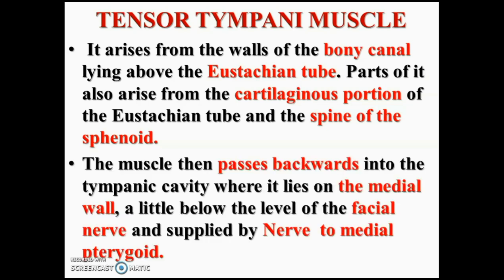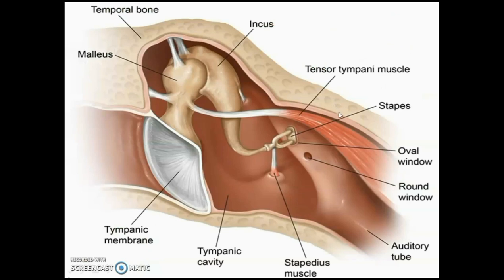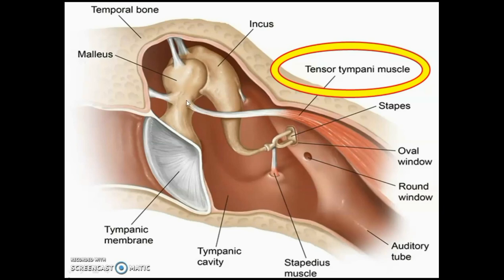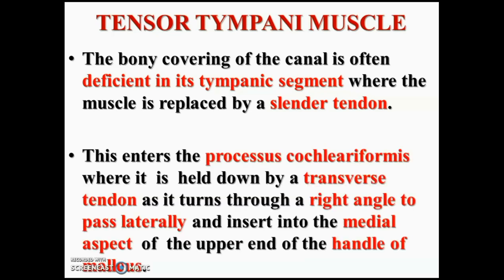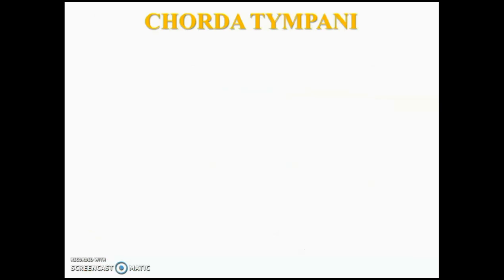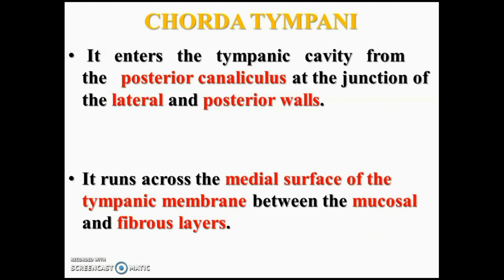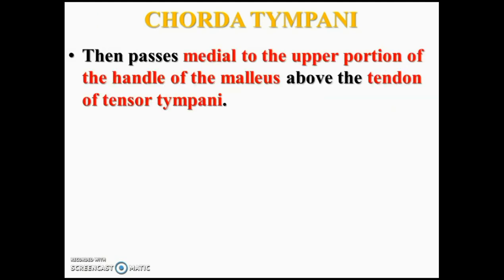The next muscle is tensor tympani. It takes origin from the cartilaginous part of the Eustachian tube and spine of sphenoid. It runs posterolaterally backwards into the tympanic cavity where it lies in the medial wall just in front and below the oblique part of the facial nerve. It is attached to the middle part of the upper part of the handle of malleus. This muscle is covered by a thin bony canal which is deficient in its tympanic segment and replaced by a slanted tendon. That tendon hooks around the processus cochleariformis at right angle, passes laterally, and inserts into the medial aspect of the upper end of handle of malleus. It is supplied by the nerve to medial pterygoid and retracts the tympanic membrane or handle of malleus medially.